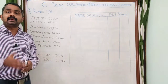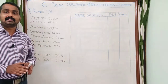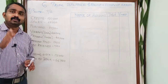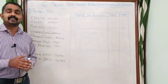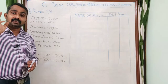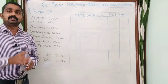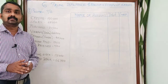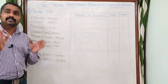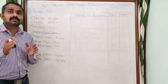It also helps to locate errors. In the last class, we learned the three methods of trial balance preparation: the total method, the balance method, and the balance-cum-total method. In this class, we are learning the balance method.